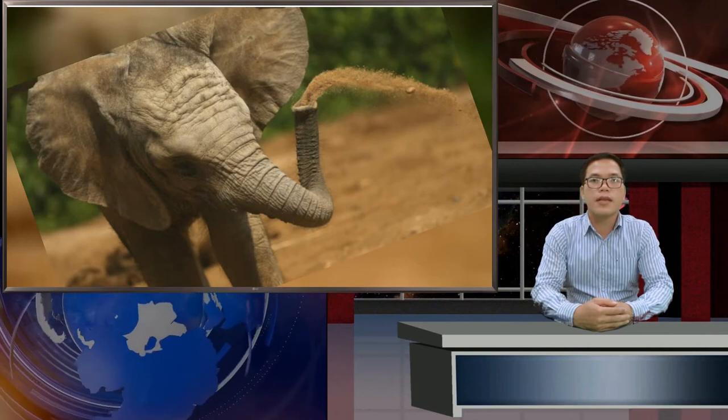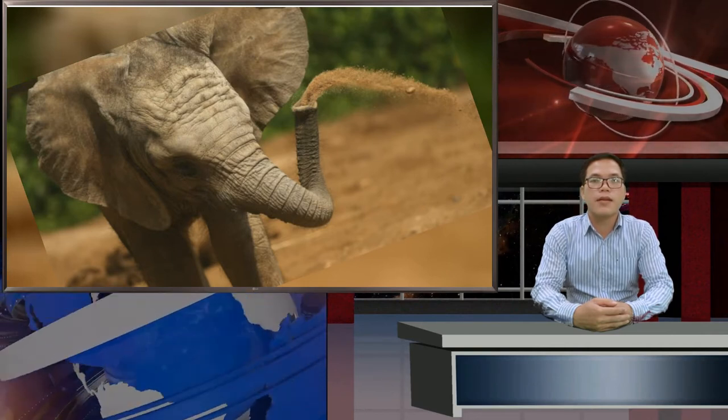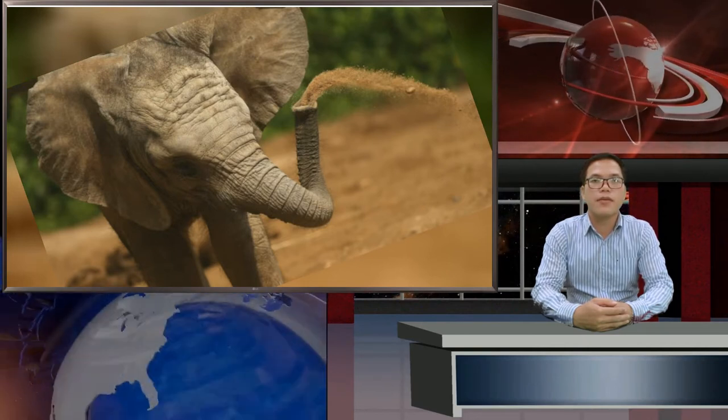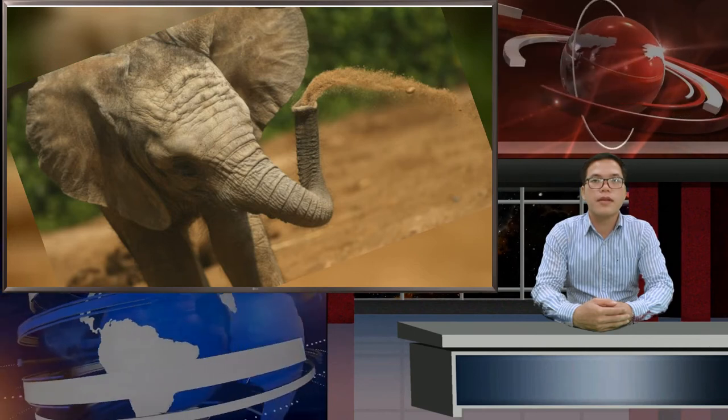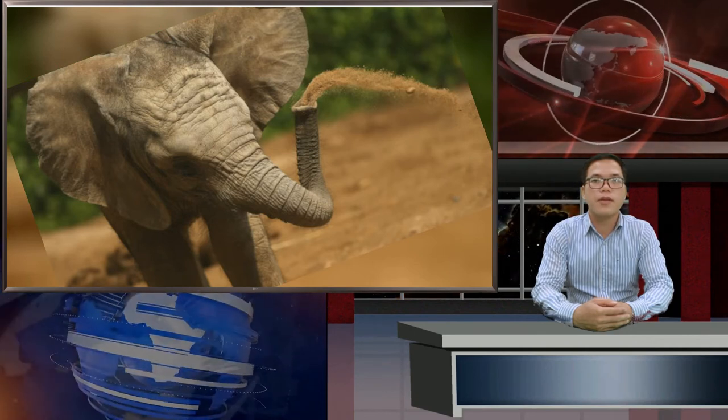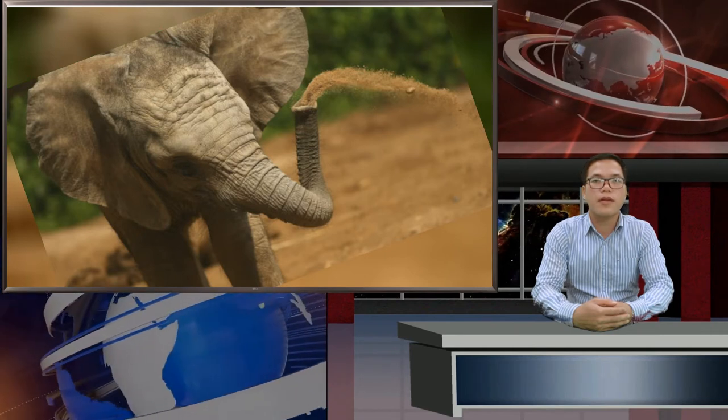The suction ability displayed was not just powerful, but precise. In one test, researchers placed a tortilla chip on the flat surface of a force plate, which measures movement strength, weighing in at about 220 pounds. The elephant's trunk could smash the chip with very little pressure,